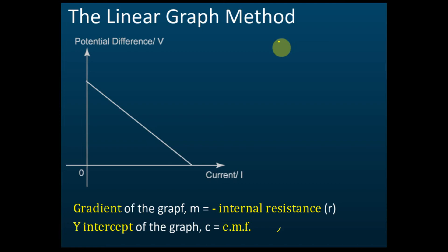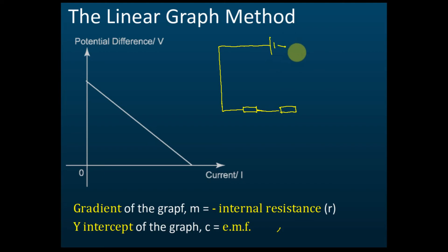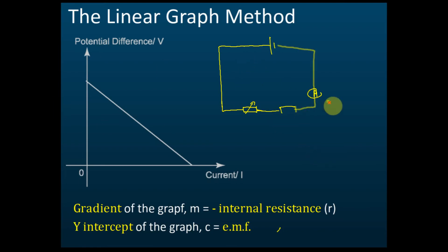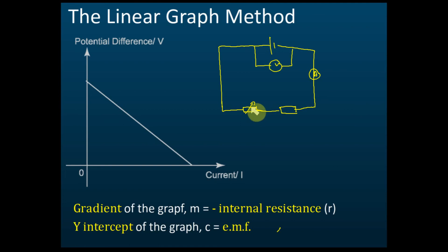Let me draw the circuit. We have a voltmeter across the cell, an ammeter, and a variable resistor which we can change the resistance. When we change the resistance, the readings of the voltmeter and the ammeter will change.